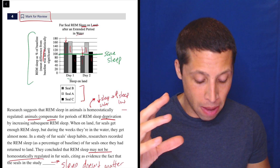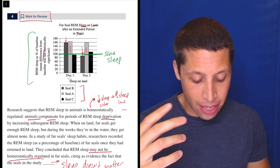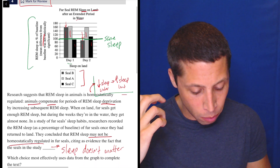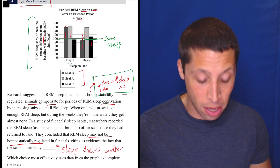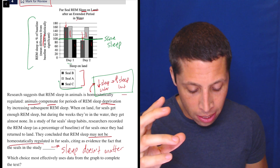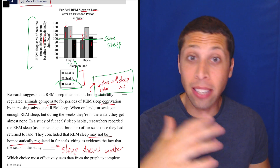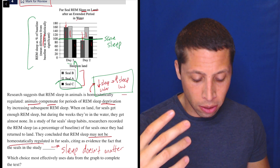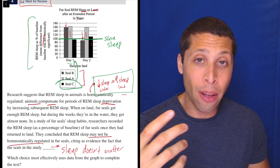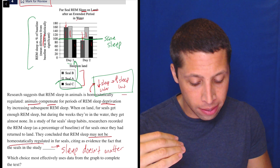And then day two — nothing would have changed other than it's just day two. Seal A is still getting more. But now Seal B is less than when it started. The very thing we were supposed to prove — that after being in the water and having less sleep, they'd come back and get more sleep — Seal C on day one seems to be proving that wrong. Seal C did not get more sleep; Seal C got less sleep.